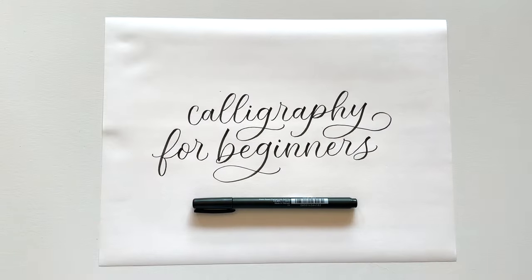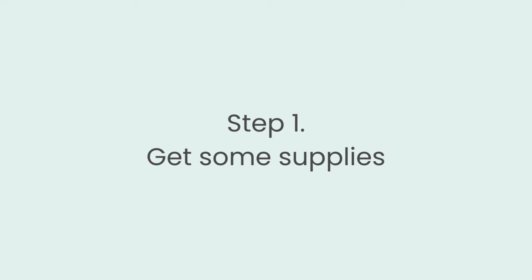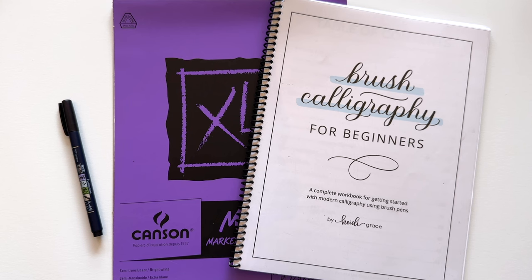To start doing calligraphy or brush lettering, whatever you want to call it, all you need are three things: a brush pen, paper, and worksheets. Or you can skip the worksheets so you only need two things.